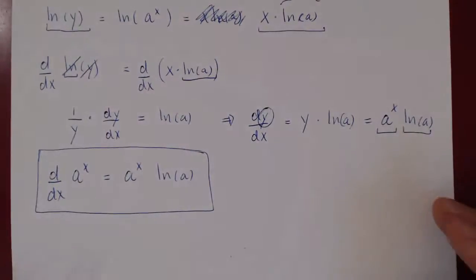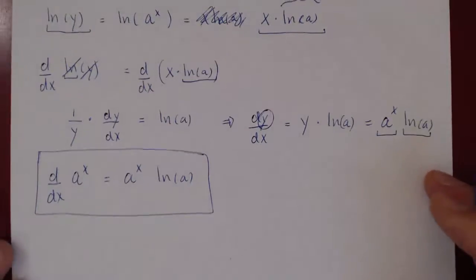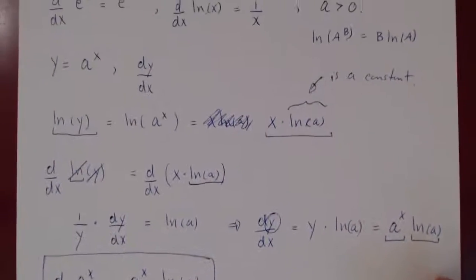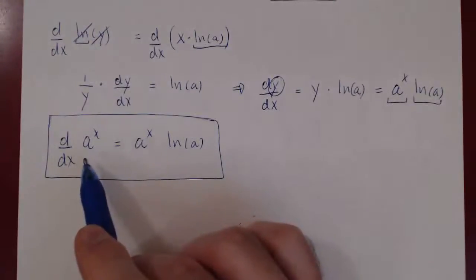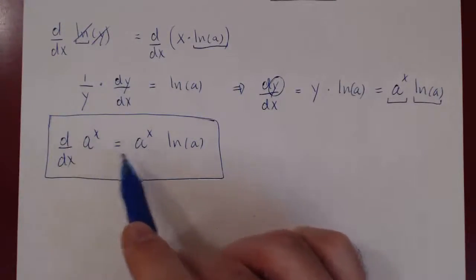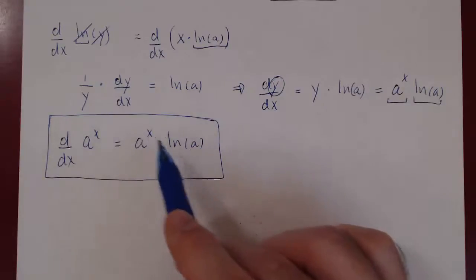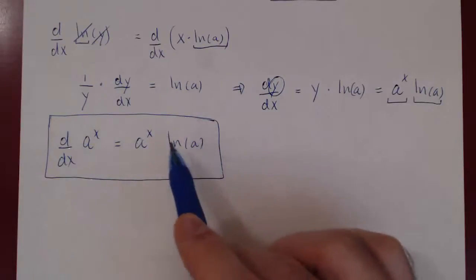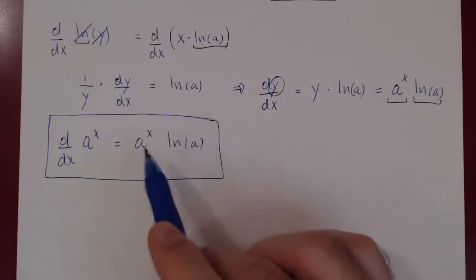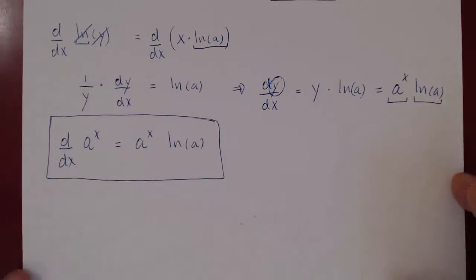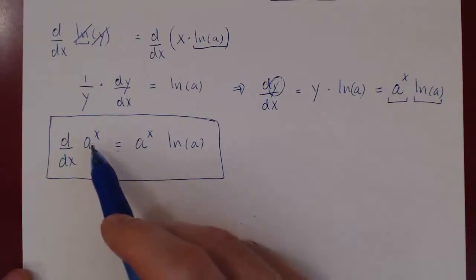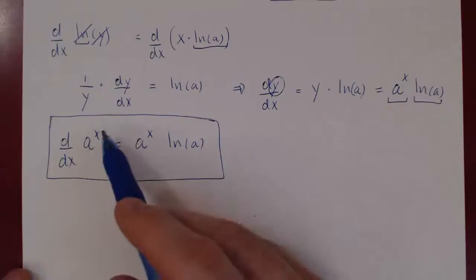Does this agree with the derivative of e to the x? The derivative of e to the x was e to the x, so if you plug in e for a, you'd have e to the x times ln of e, but ln of e is 1, so you just get e to the x as before. So we now have the derivative of any exponential function.